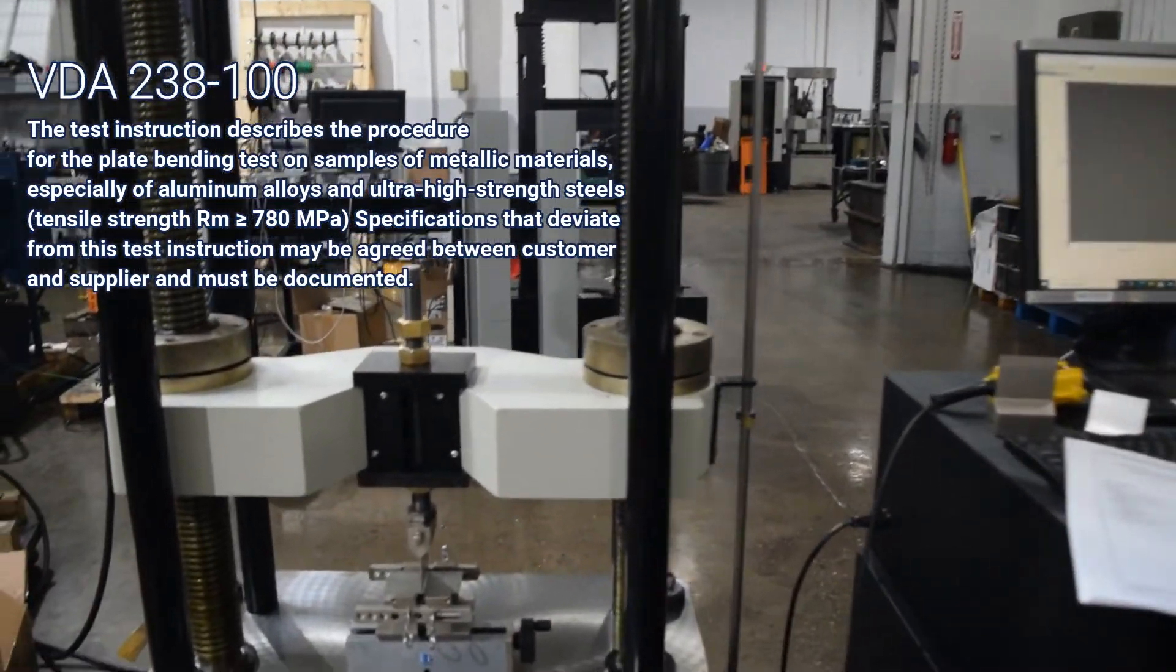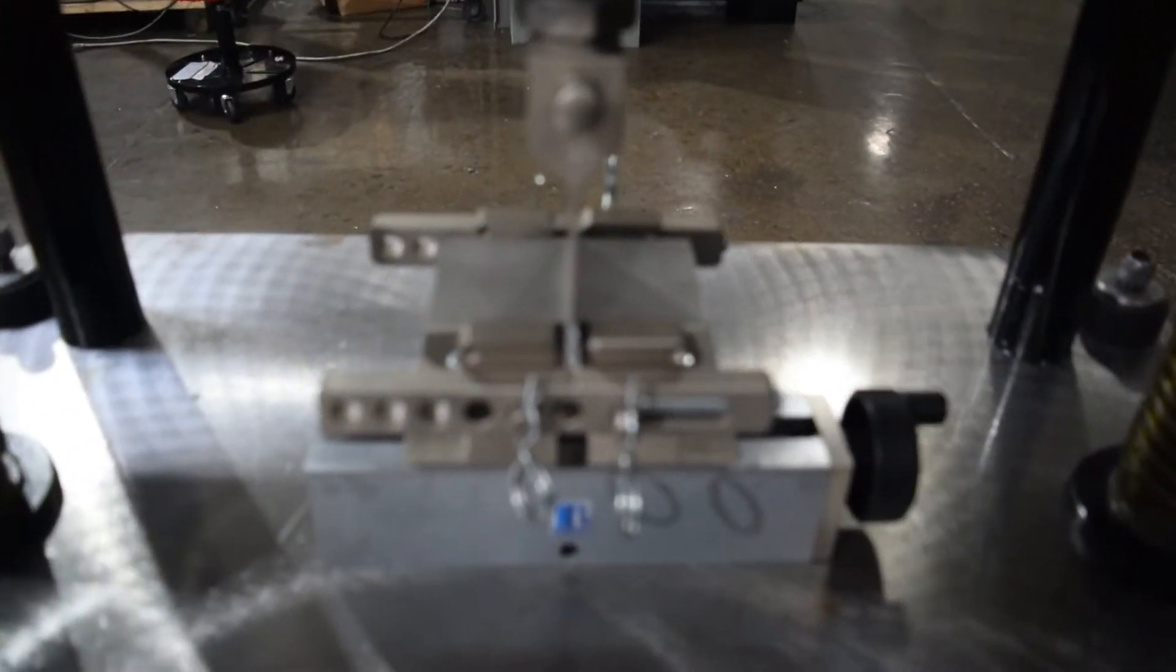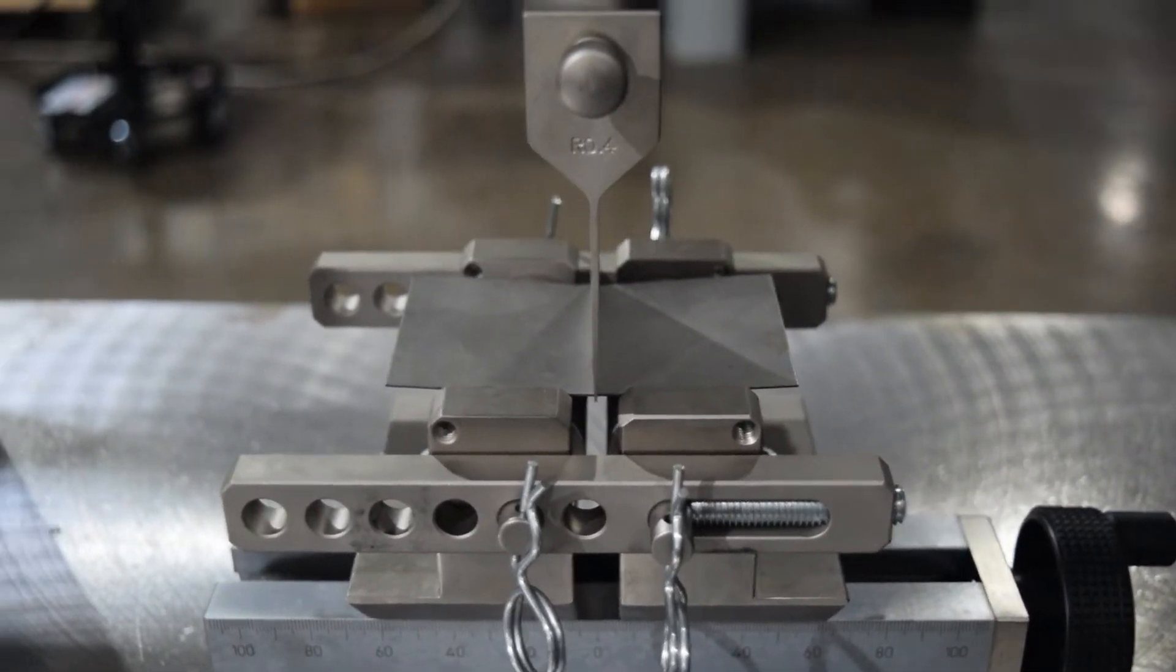When we start, the preload is going at 10 millimeters per minute until it touches the specimen. Once it touches, you'll see everything zero from a displacement standpoint and then we'll start to build load.